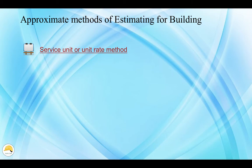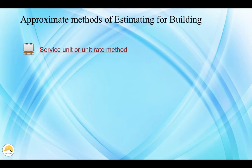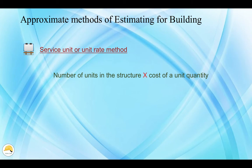The next method is the unit rate method. We write the values based on the unit. For example, a hospital is estimated per bed, a school is estimated per classroom, and a bridge is estimated per span. We calculate the unit and the total cost. This method can be used as a quick estimate.